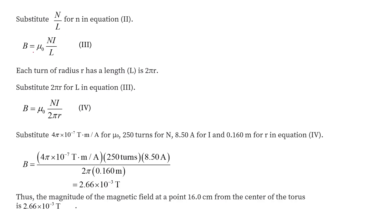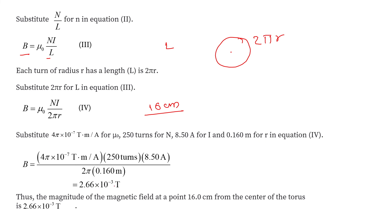We write B = μ₀Ni/l. Since each turn of radius r has a circumference length l = 2πr, we substitute to get B = μ₀Ni / (2πr). Using a radius of 16 cm at that point and substituting all known values, the magnetic field comes out to be 2.66 × 10⁻³ tesla. Thus, the magnitude of magnetic field at 16 cm from the center of the toroid is 2.66 × 10⁻³ tesla.